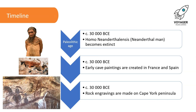Around 30,000 BCE, the other type of human-like person that lived at the same time as Homo sapiens was Homo neanderthalensis, or Neanderthal man, and Neanderthal man died out around 30,000 BCE, leaving Homo sapiens as the only human species left on Earth. It was around this same time that early cave paintings were created in France and Spain, and rock engravings were made on Cape York Peninsula in far north Queensland by Indigenous Australians.